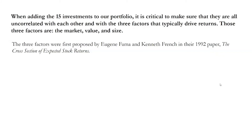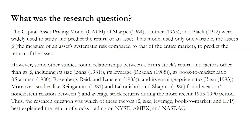Now let's discuss the paper in which Fama and French proposed their three-factor model. The research question traces back to the capital asset pricing model, which was widely used to predict the return of an asset. CAPM used only one variable — the asset's beta, the measure of systematic risk compared to the entire market — to predict returns. However, other studies found relationships between stock returns and factors other than beta, including size, leverage, book-to-market ratio, and earnings-to-price ratio.